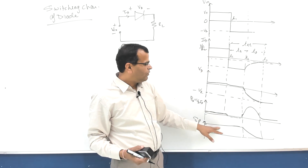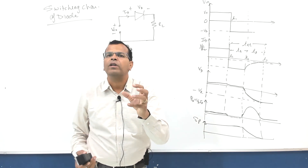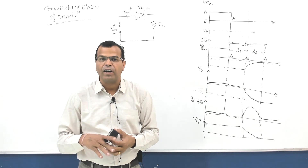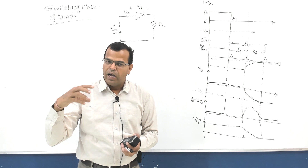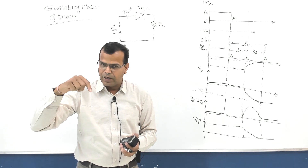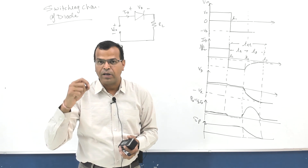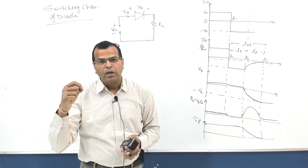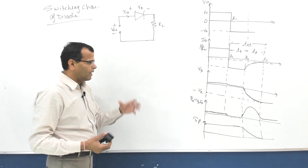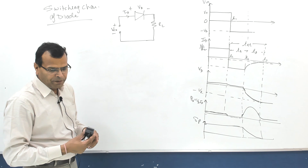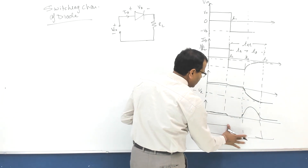When the diode is forward biased, there is storage of excess minority carriers on the N side. When a diode is forward biased there is injection of holes on the N side, and those holes are stored near the junction area on the N side. Those are called excess minority carriers stored in the N layer near the junction. So holes are stored near the junction.